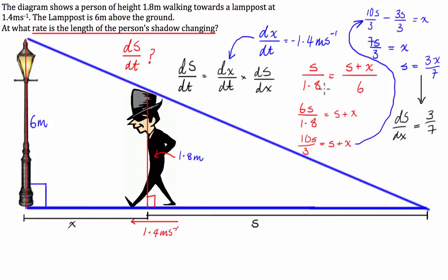Now we have all the information that we need to get this final derivative, which is what the question is asking. So let's write it all out. We have dS/dt equals dx/dt multiplied by dS/dx.